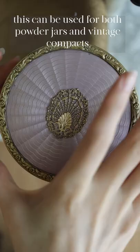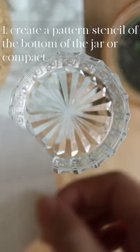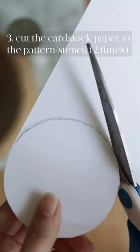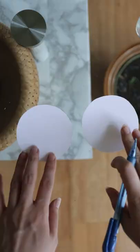Let's make a vintage sift for loose powder makeup. This works great for both vintage jars and compacts. First, figure out the size the sift will go into, then grab some sturdy cardstock-like paper and cut it to the desired shape and size.